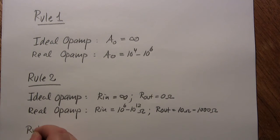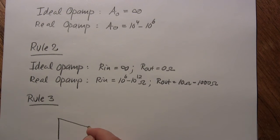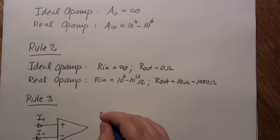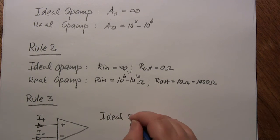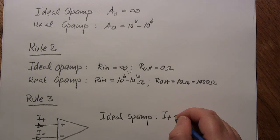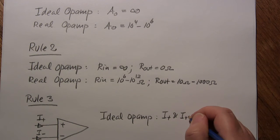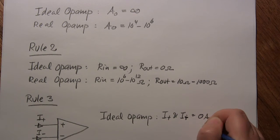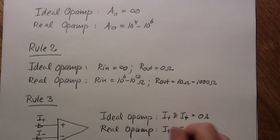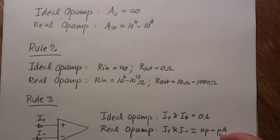Rule 3 is about the currents into the op-amp. In the ideal case, the currents at the non-inverting and inverting inputs are 0 amps. For the real op-amp, those currents are in the range of nano-amperes to pico-amperes — very small, but still not zero.